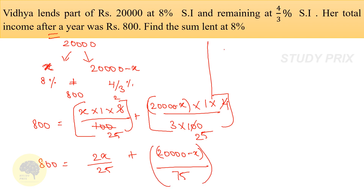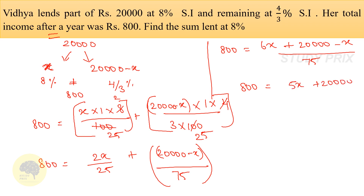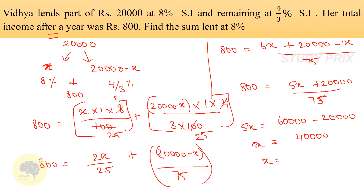Taking LCM: 800 = (6X + 20,000 − X)/75 = (5X + 20,000)/75. Therefore 5X = 800 × 75 − 20,000 = 60,000 − 20,000 = 40,000. Therefore X = 40,000/5 = 8,000 rupees. So 8,000 rupees is the principal amount lent at 8%.